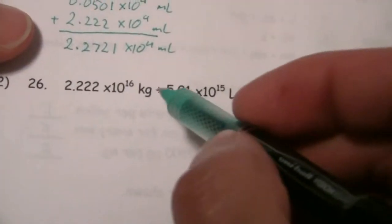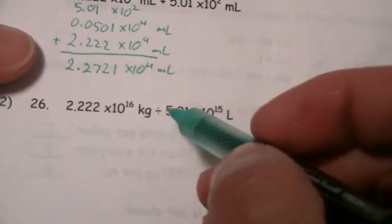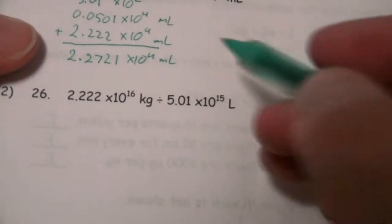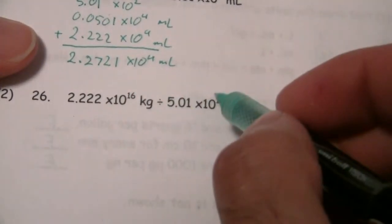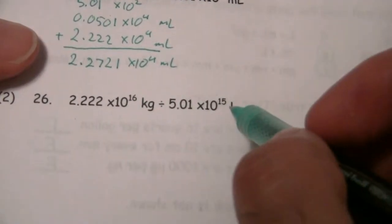Now here we have a division. So when we're dividing numbers, what do we do with the exponents? We subtract them.